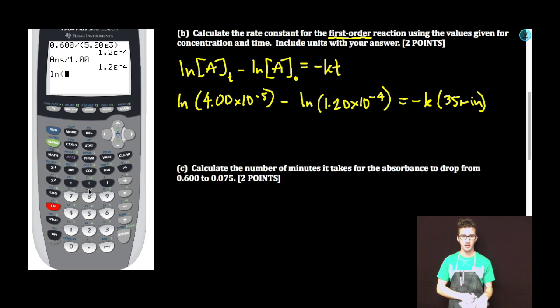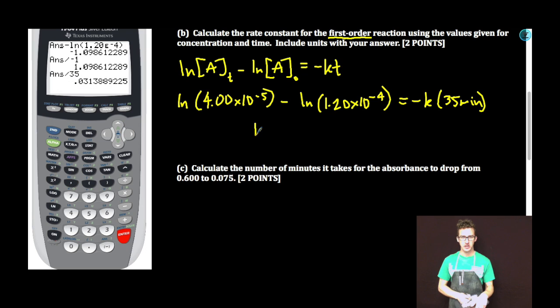Calculator. Natural log, 4.00 second e, negative five, close parentheses. Minus natural log, 1.20 second e, negative four, close parentheses. Divided by negative one. Divided by 35. k is equal to 0.0314. Now be careful with our units here. It's a first order reaction we're going to get per minute.